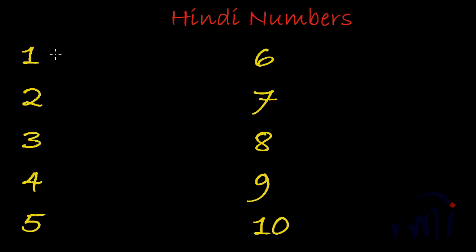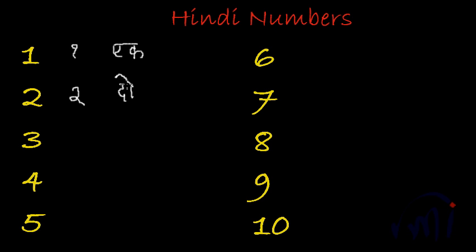So this is 1 and it is called ek in Hindi. This is 2 and it is called do, written as da with o ki matra — do. This is 3 and it is called teen.